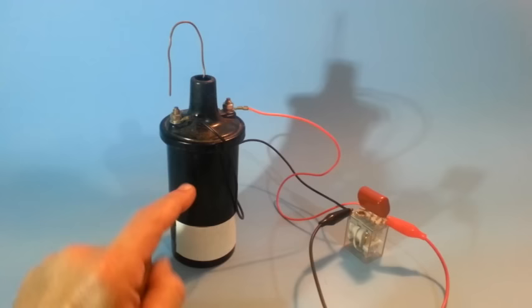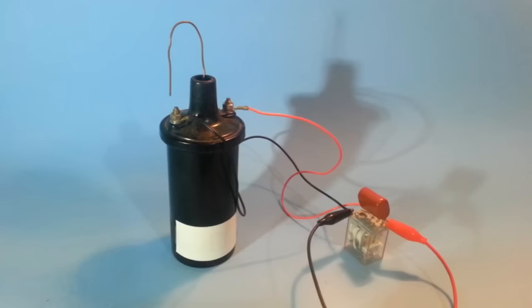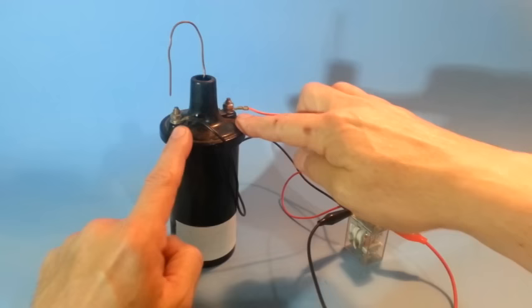One of the easiest ways to obtain high voltage is with an ignition coil and a relay. The ignition coil needs a pulsating current through its primary to work.